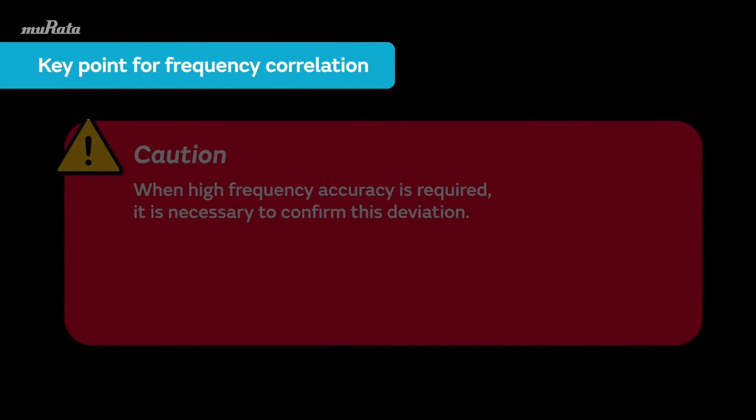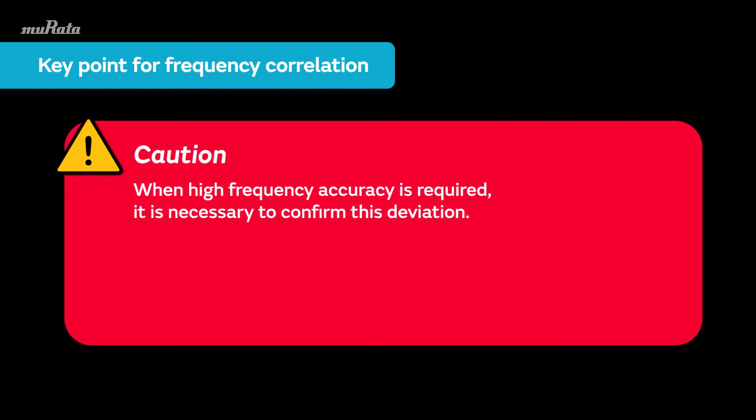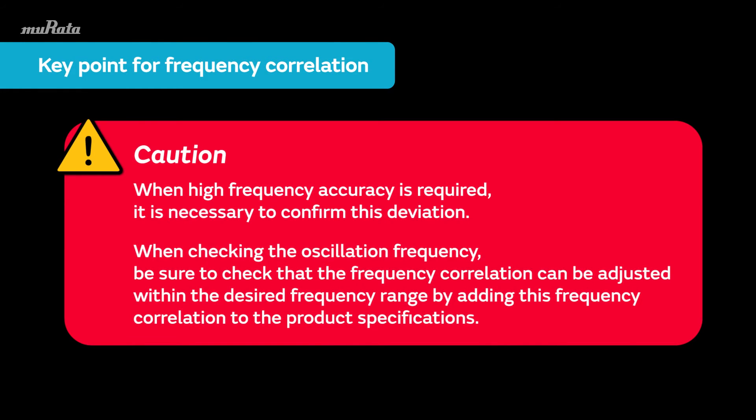When high frequency accuracy is required, it is necessary to confirm this deviation. When checking the oscillation frequency, be sure to check that the frequency correlation can be adjusted within the desired frequency range by adding this frequency correlation to the product specifications.